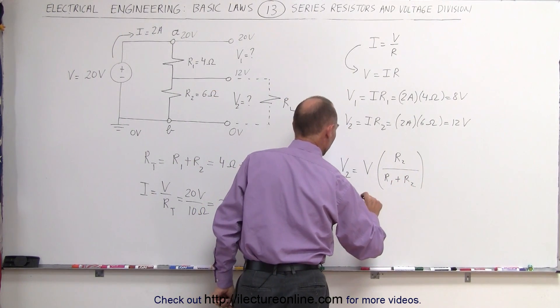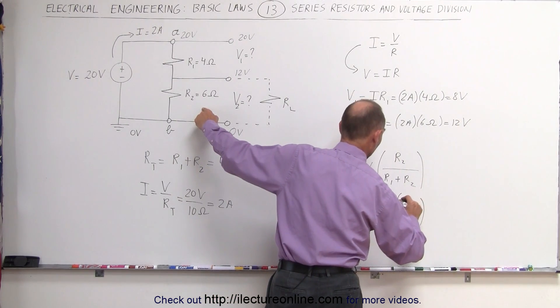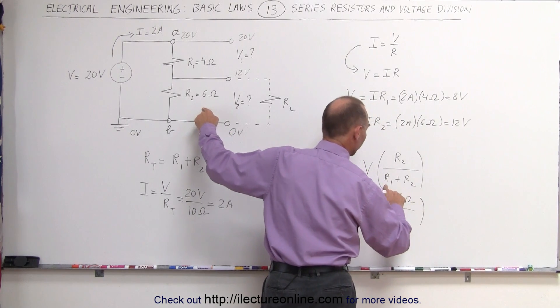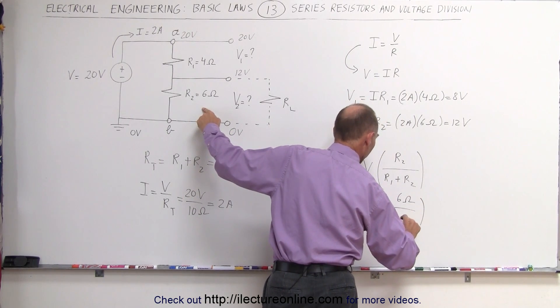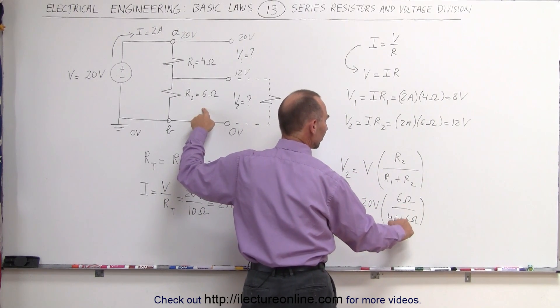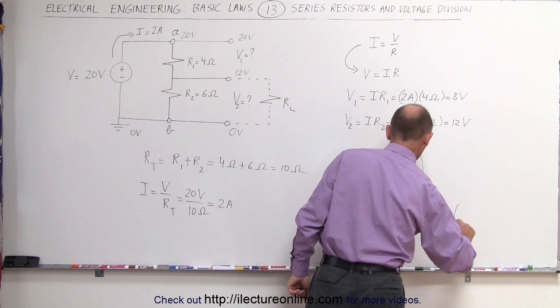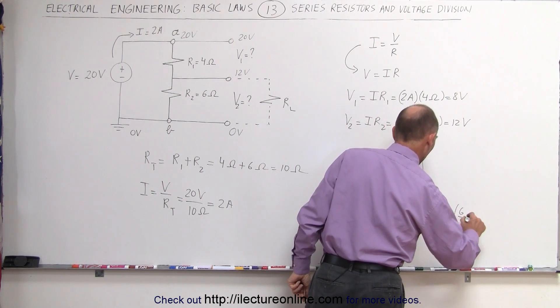In this case, V2 is equal to 20 volts times the ratio of 6 ohms divided by 4 ohms plus 6 ohms. That's 6 divided by 10, or 20 volts times 6 over 10, which is equal to 12 volts.